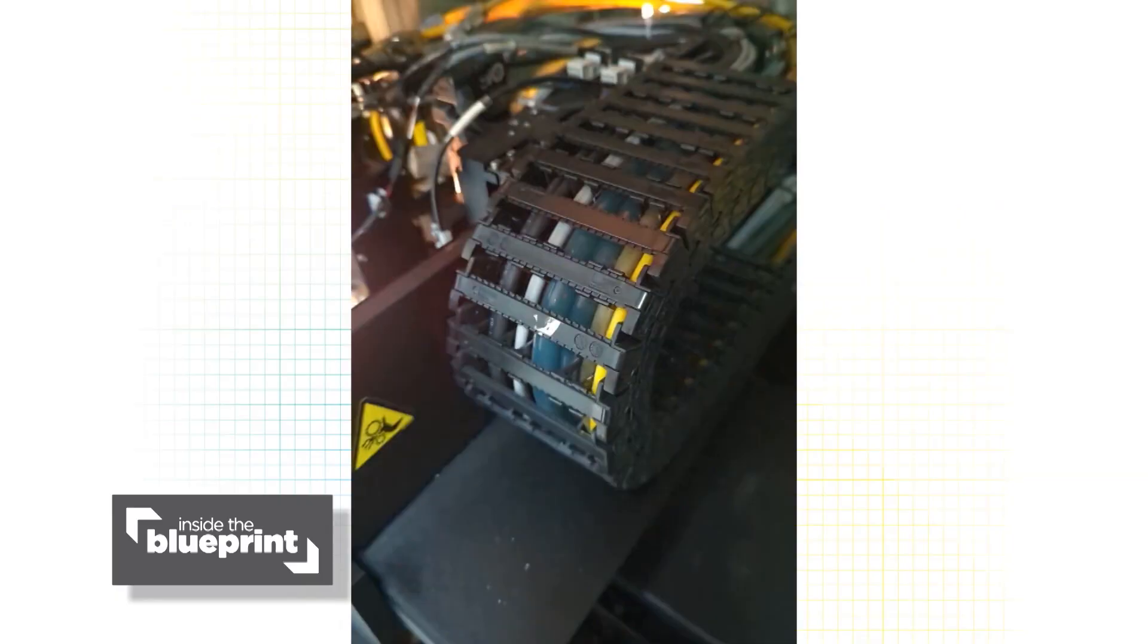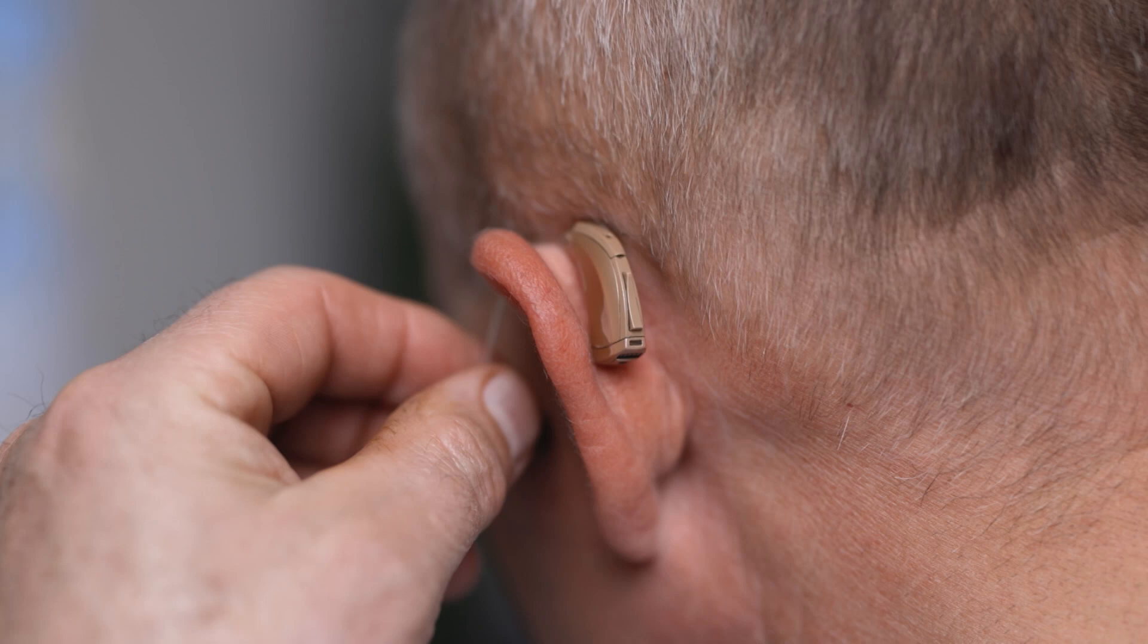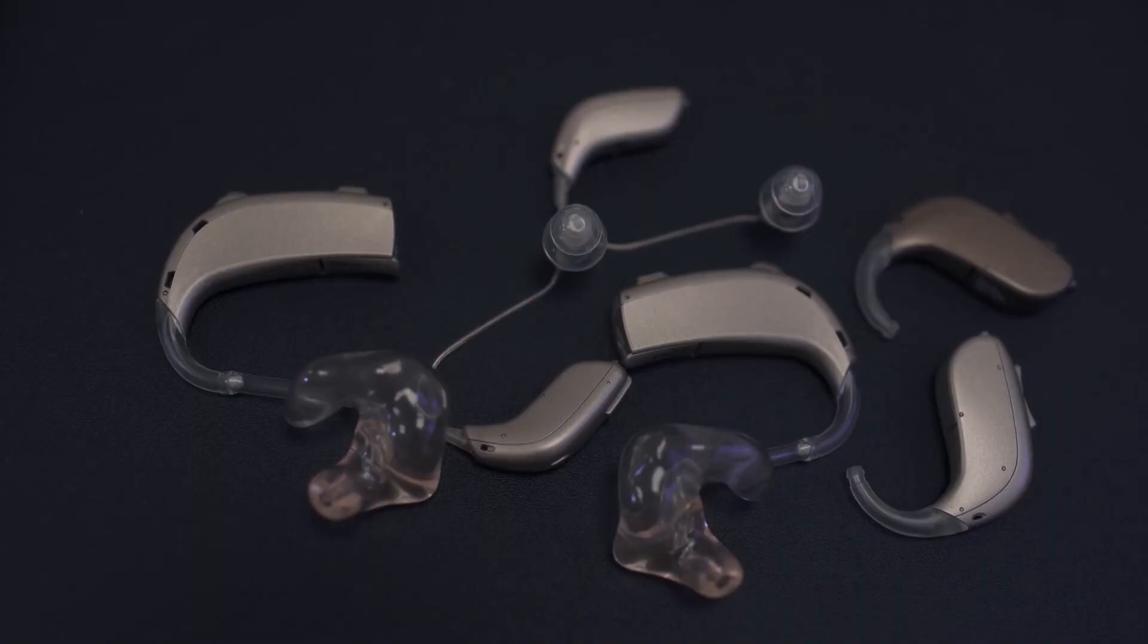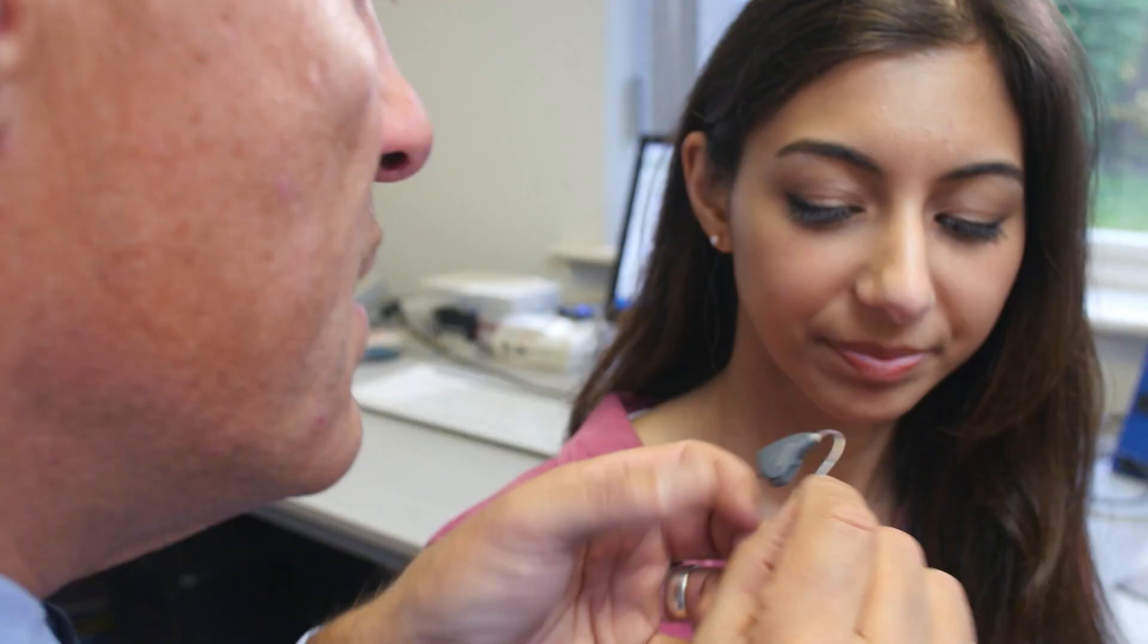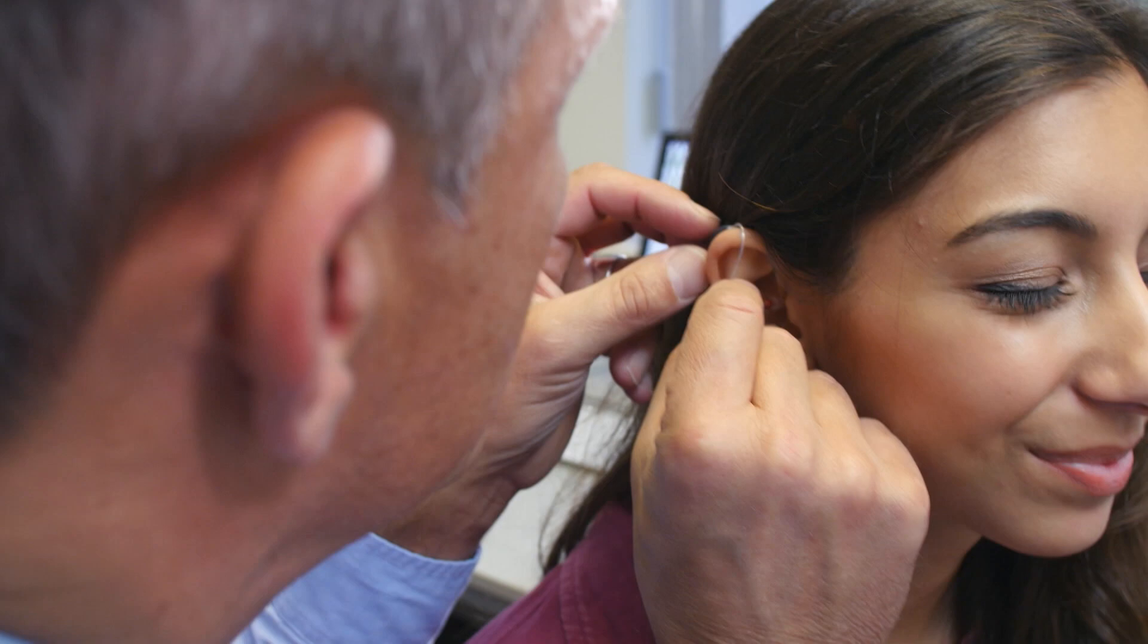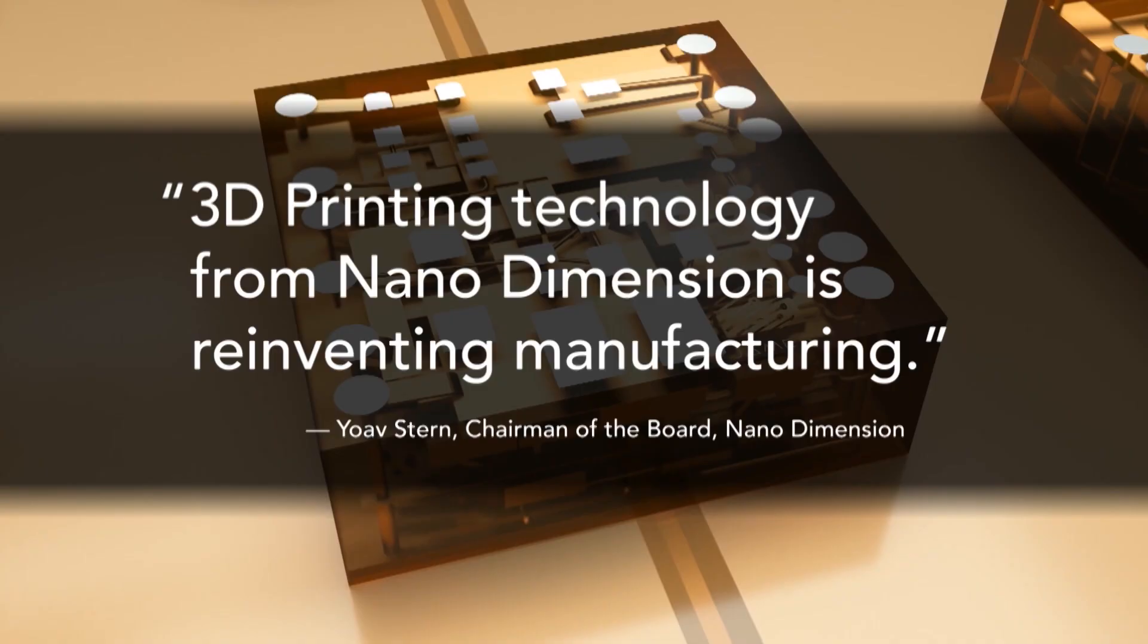If you think about a hearing aid, it's pretty complicated if you make it with subtractive manufacturing. You have to manufacture a housing that's custom to somebody's ear, tiny electronics that all have to be soldered together and put in that housing. If we think about 3D printing a hearing aid, we press print. As soon as the print is done, we can take that hearing aid off the printer and hand it to a doctor to be fitted to a patient.